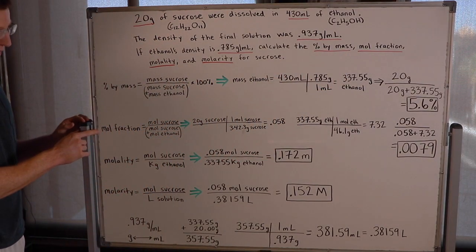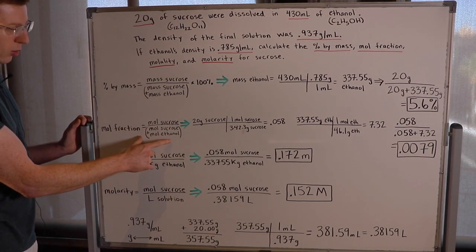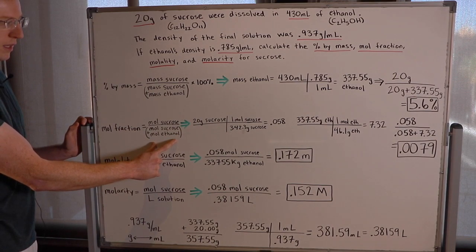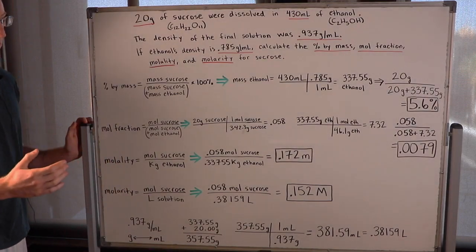Okay, now moving on to the mole fraction. Similar process here, we've got moles of sucrose over the total moles of the solution, which is moles of sucrose plus moles of ethanol in the denominator. So I had to find moles of sucrose and moles of ethanol for this problem.